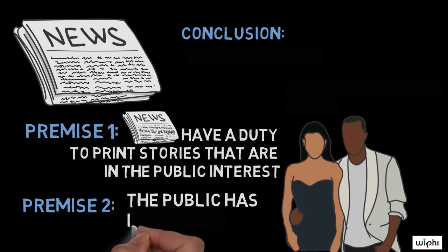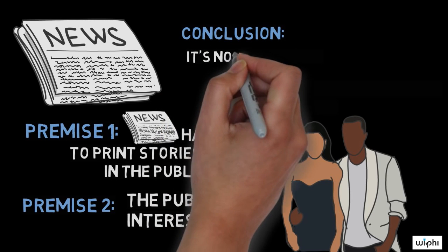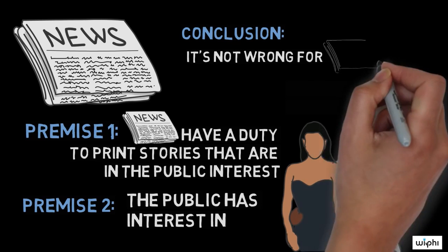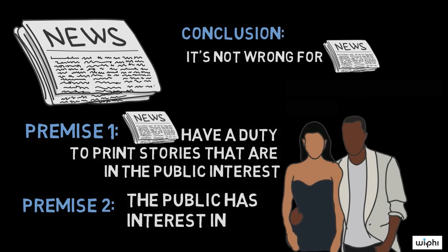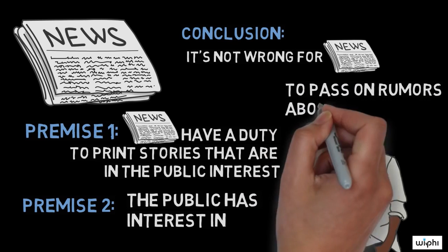Premise 2: the public has great interest in rumors about celebrities, since circulation increases when newspapers print such stories. Conclusion: it's not wrong for respectable newspapers to pass on rumors about celebrities.